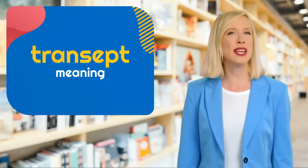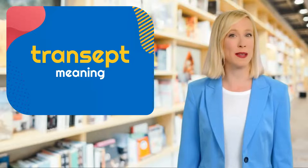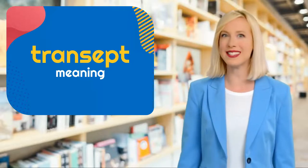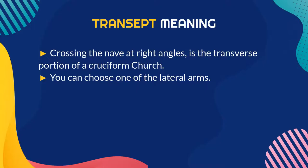Hey there! It looks like you're about to learn something new. Do you know what this means? Transept meaning: the transverse portion of a cruciform church, crossing the nave at right angles. You can choose one of the lateral arms.